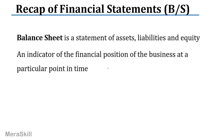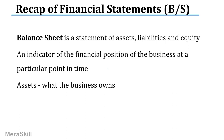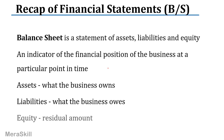The financial statements we discussed include the balance sheet and the income statement. The balance sheet is a statement of assets, liabilities, and equity. It indicates the financial position of a business at a particular point in time. Assets are what the business owns, while liabilities are what the business owes. Equity is the residual amount — the difference between the two that belongs to the owner.